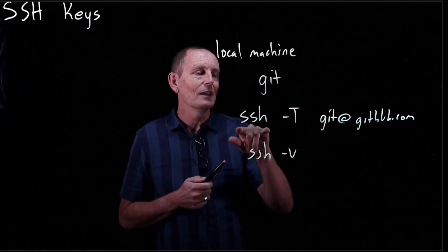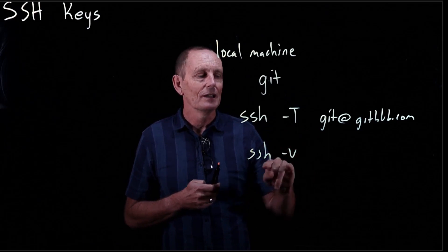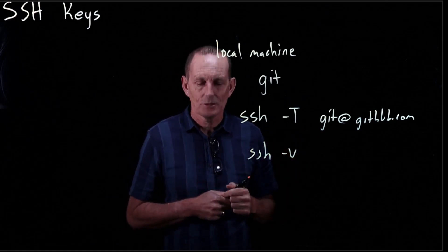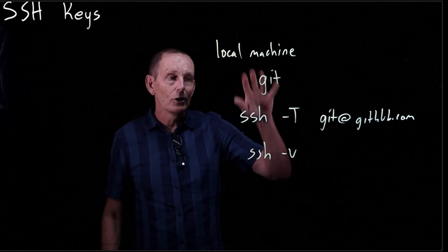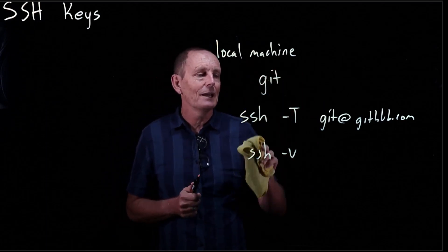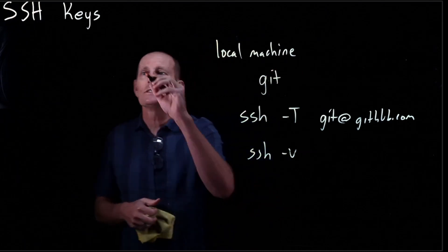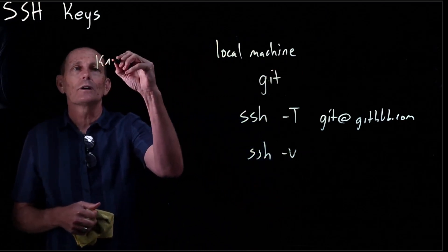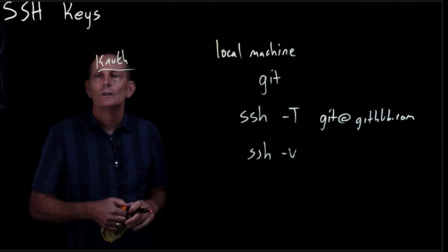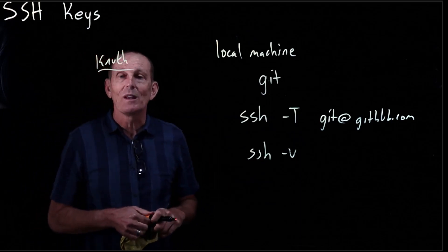So that's why Git provides this SSH login capability — so that you can go ahead and use the minus V flag and diagnose what's going on. On your local machine this is going to work great and you'll be able to use Git commands. The problem is on Knuth it's not going to work, and the reason is on Knuth, SSH agent doesn't have your private key.